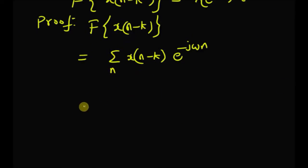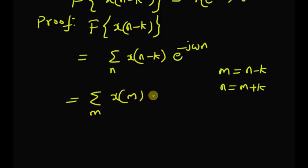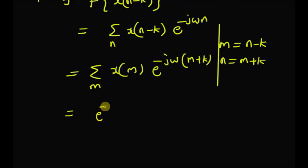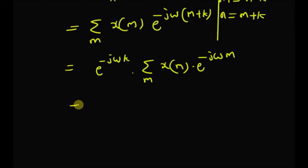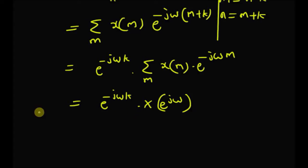Note that we just write n for n equal to minus infinity to plus infinity. Now, let us define a new variable m which is equal to n minus k, then n is equal to m plus k. So this summation becomes summation over m of x of m multiplied by e power minus j omega into m plus k. This is equal to e power minus j omega k. Since k is independent of m, we can write e power minus j omega k outside the summation. So we have e power minus j omega k into the sum of x of m multiplied by e power minus j omega m. This summation is clearly the definition of DTFT of x of m, therefore equal to e power minus j omega k times X of e power j omega. Thus, shifting in time is equivalent to multiplying the original DTFT by an exponential e power minus j omega k.